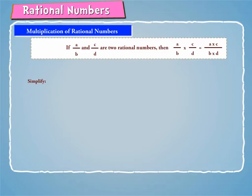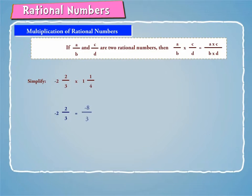Let us simplify minus 2 and 2 by 3 into 1 and 1 by 4. We have minus 2 and 2 by 3 is equal to minus 8 by 3, and 1 and 1 by 4 is equal to 5 by 4.